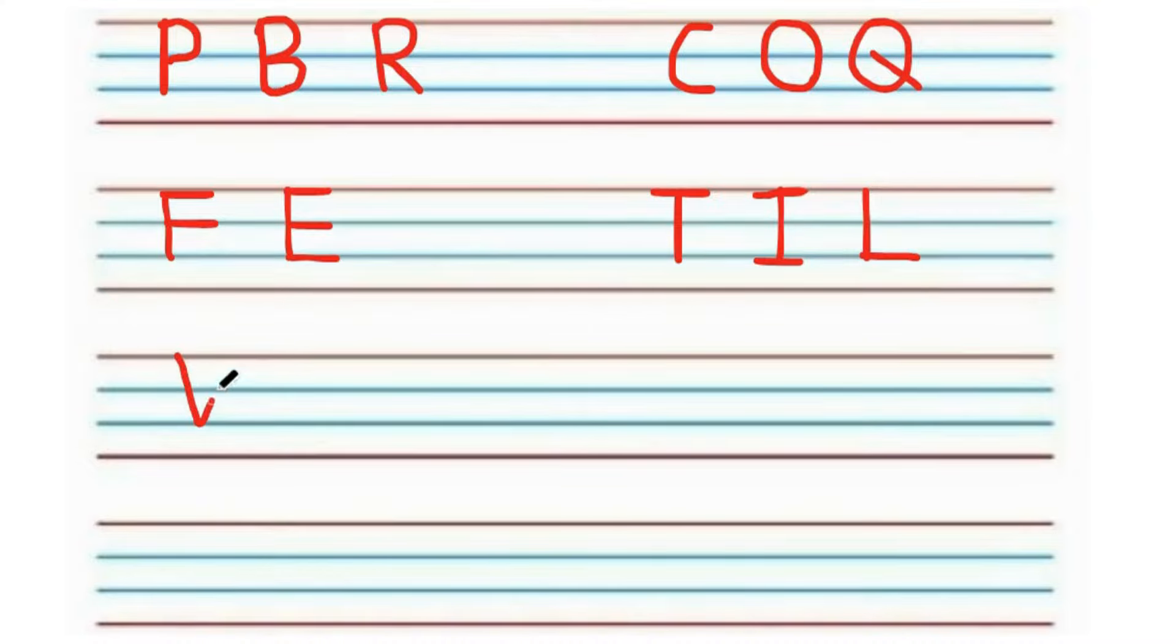Next, let's write V. Do you know which alphabet is similar to V? Yes, alphabet W. Make two V's to make a W.